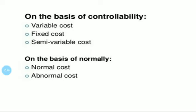The next basis is classification of cost on the basis of normality. On this basis, the costs are mainly classified into two: normal cost and abnormal cost. First, normal cost. Normal cost is a part of the cost of production and part of the costing profit and loss of the organization. These are costs that the firm incurs at the normal level of output under standard conditions. Second, abnormal cost. These costs are not normally incurred at a given level of output under the conditions in which normal level of output occurs. These costs are charged to the profit and loss account; they are not a part of the cost of production.